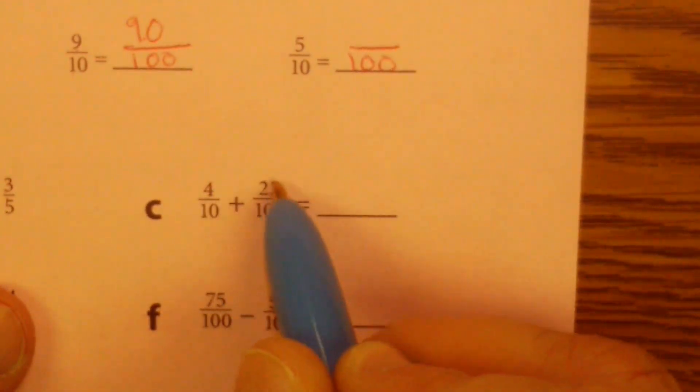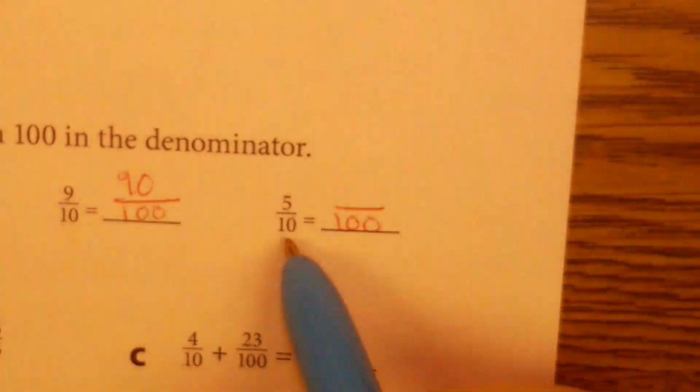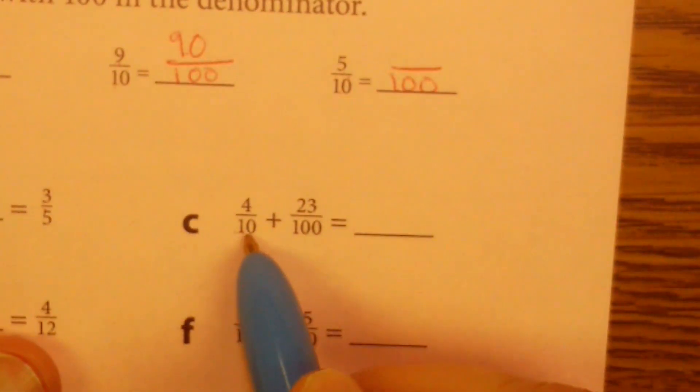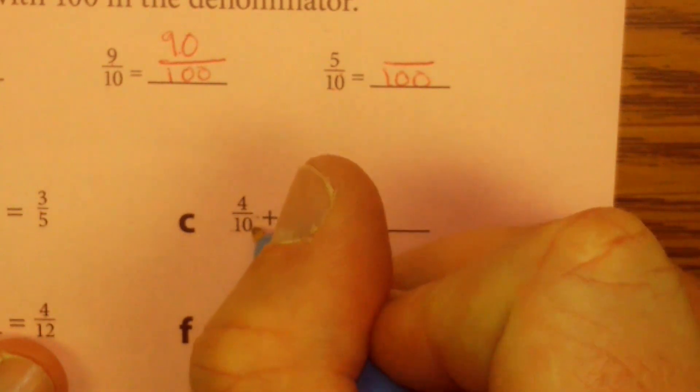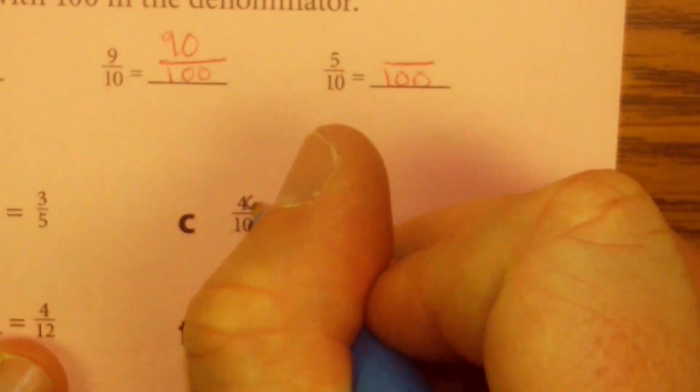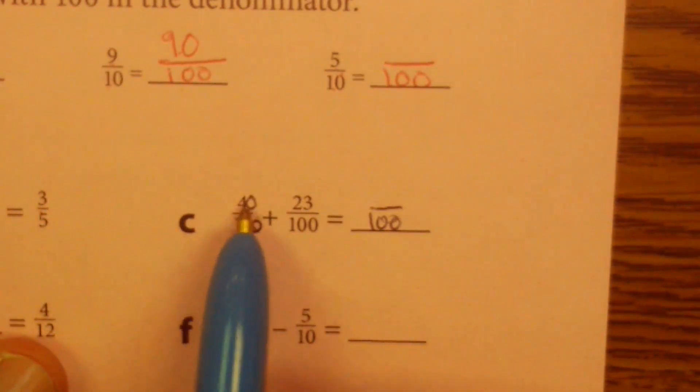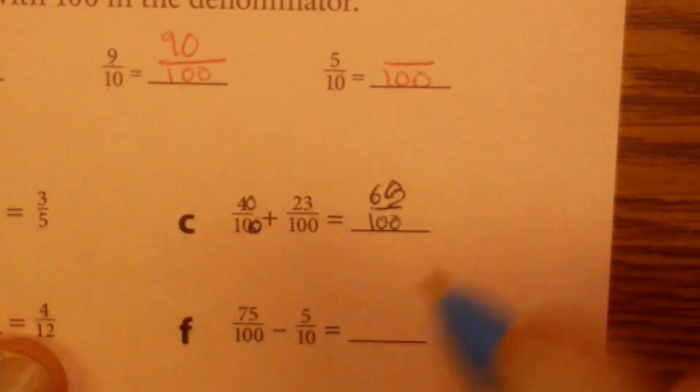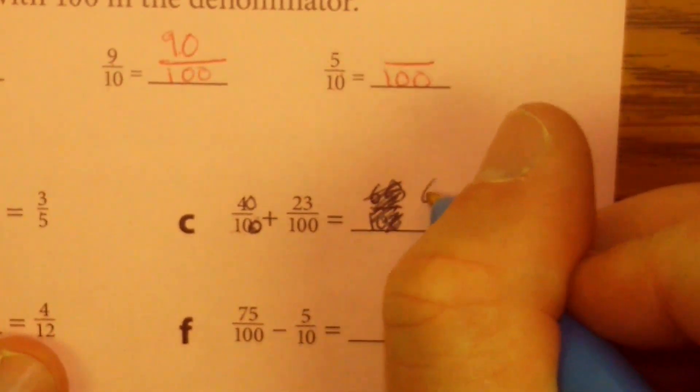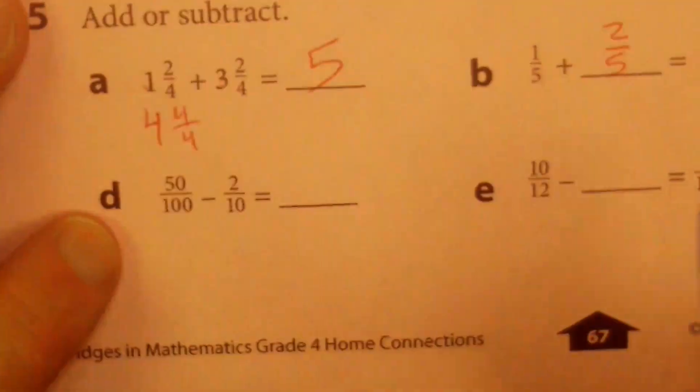C says four-tenths plus twenty-three-hundredths equals something. Well, we can't combine these numbers right now because they don't match. But if you remember what we did up here, what do we do to tenths to make it hundredths? You add a zero. So I'm going to just sneak in here. Maybe I'll even write it in black. And I'm going to just sneak a little zero in here. Forty-hundredths plus twenty-three-hundredths is how many hundredths? Forty plus twenty-three? Sixty-three. Sorry that that three looks so terrible. But that's supposed to say sixty-three. Maybe I'll just rewrite it. Okay.